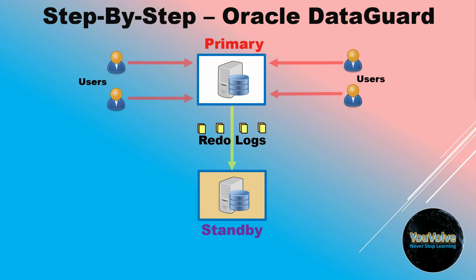Let's first understand what is Oracle DataGuard. As the name implies, Oracle DataGuard is the guard or protector of your data. In the DataGuard configuration, you will have one database where your users or application is connected, making the changes, and it is called the primary database. As each and every change happening in the primary database also generates redo logs in the primary, these redo logs are then propagated to one or more standby databases and applied on them, keeping them in sync with the primary database.